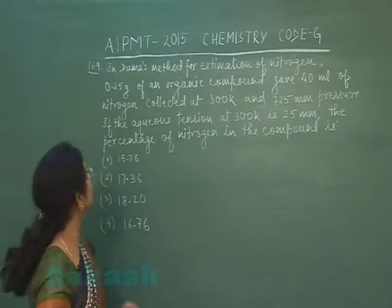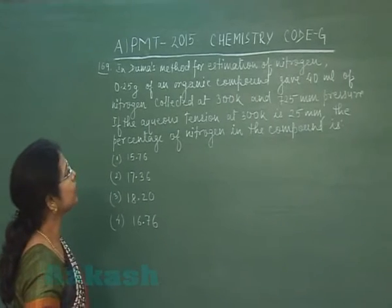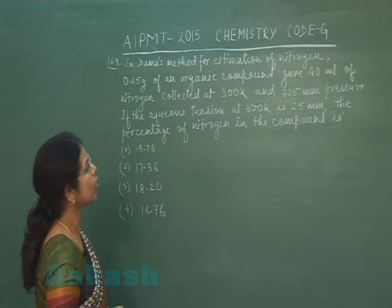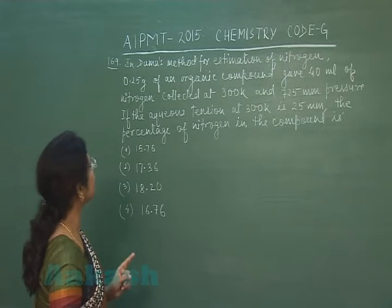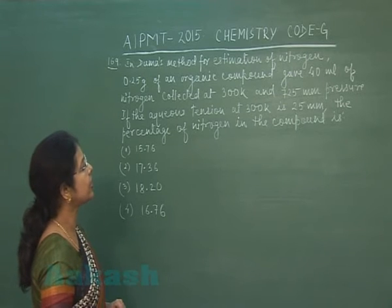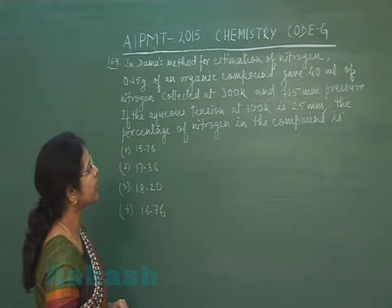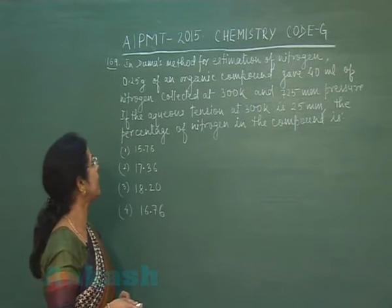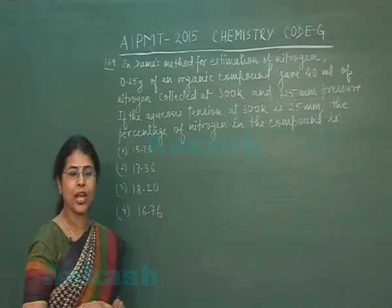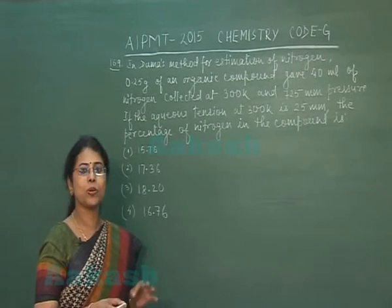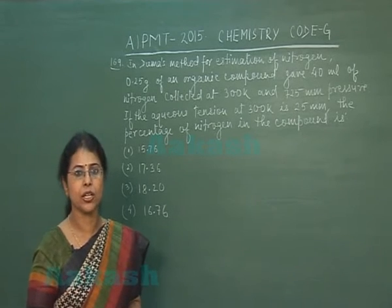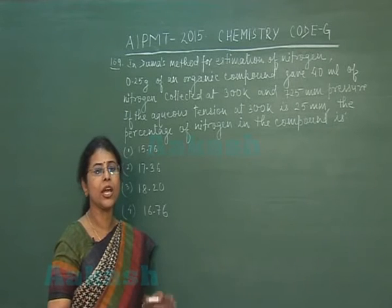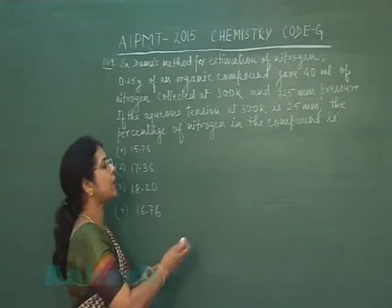Next is question number 169: in the Dumas method for estimation of nitrogen, 0.25 grams of an organic compound gives 40 mL of nitrogen collected at 300 K and 725 mm pressure. Aqueous tension at 300 K is 25 mm. We first calculate the volume of nitrogen at standard conditions.